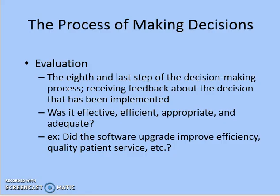Once the decision is implemented, the last stage is evaluation. In this stage, we assess how effective and efficient the implemented decision — Option C — has been after it has been put into use. This is the final step of the decision making process: receiving feedback about the implemented decision, asking whether it was effective, efficient, appropriate, and adequate. For our nutrient analysis software, we ask: did the software upgrade improve efficiency, quality, patient service, etc.?